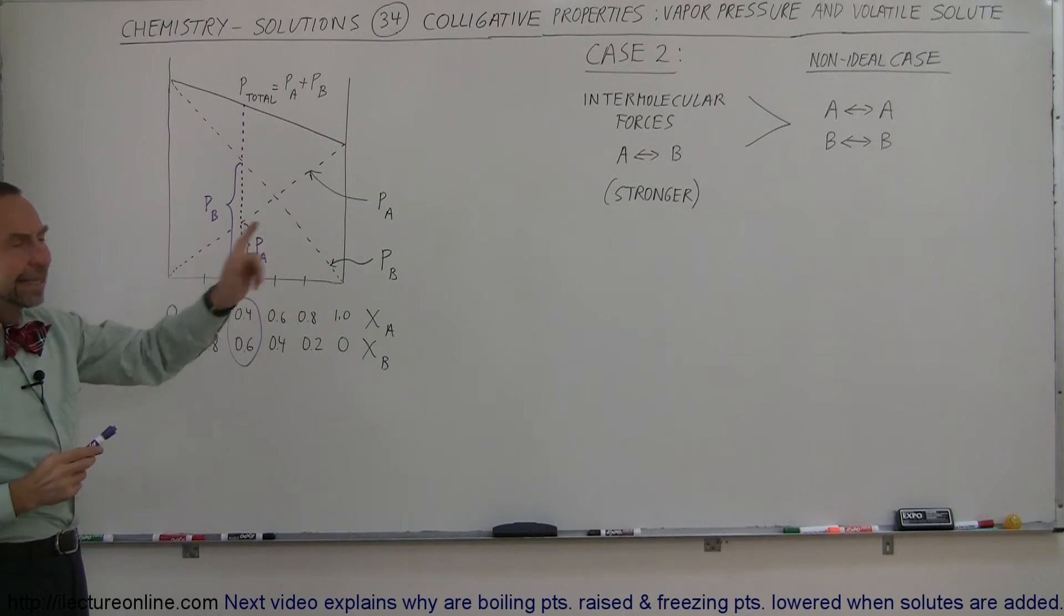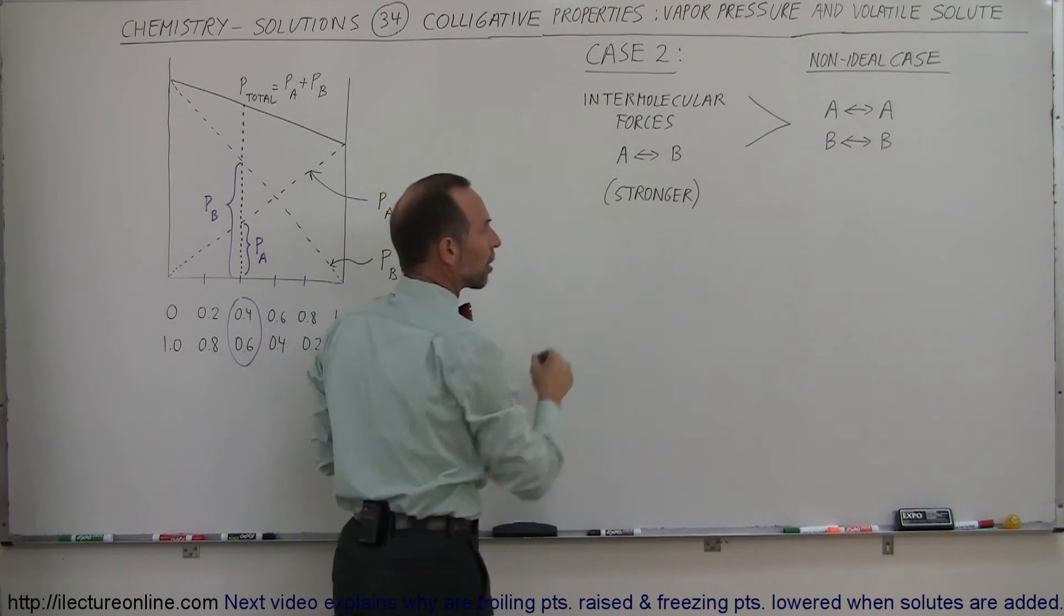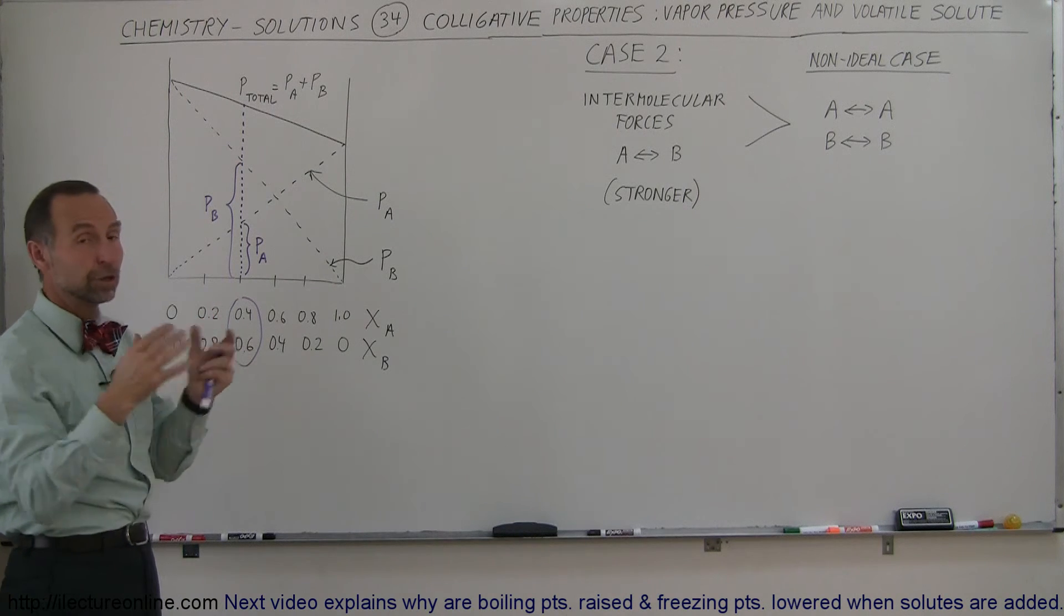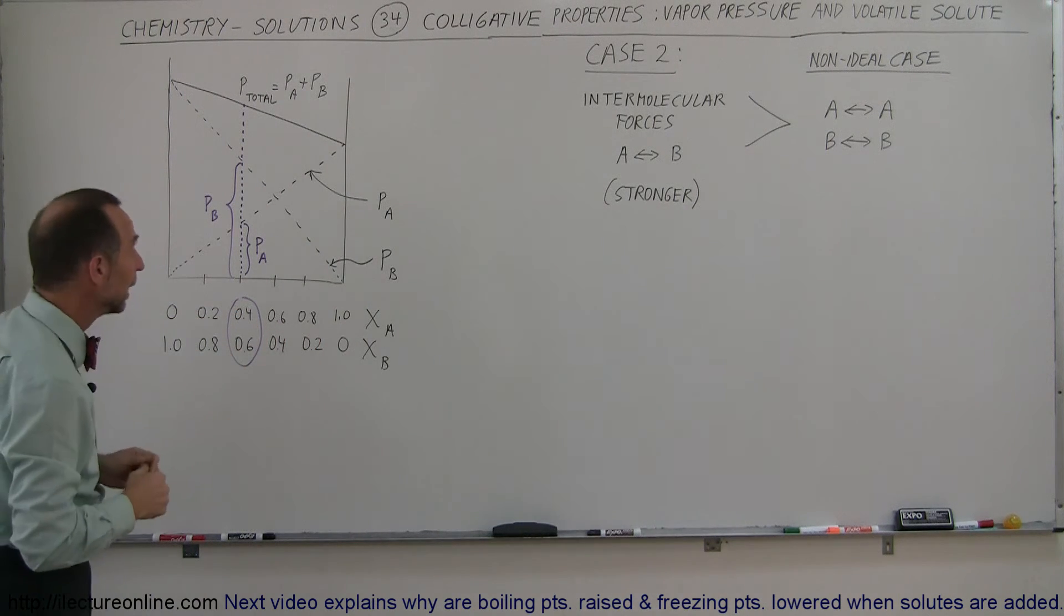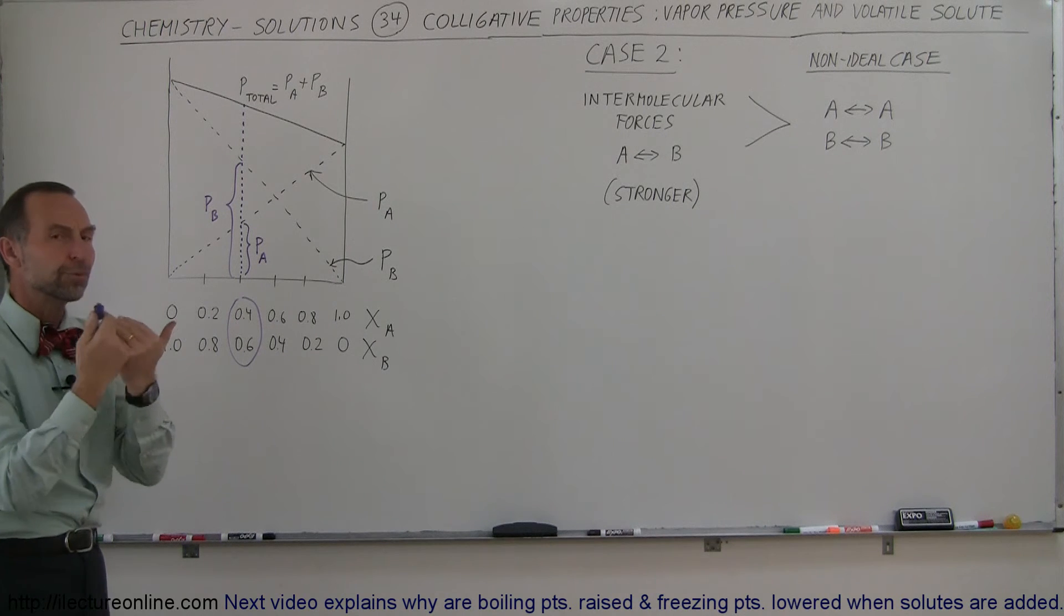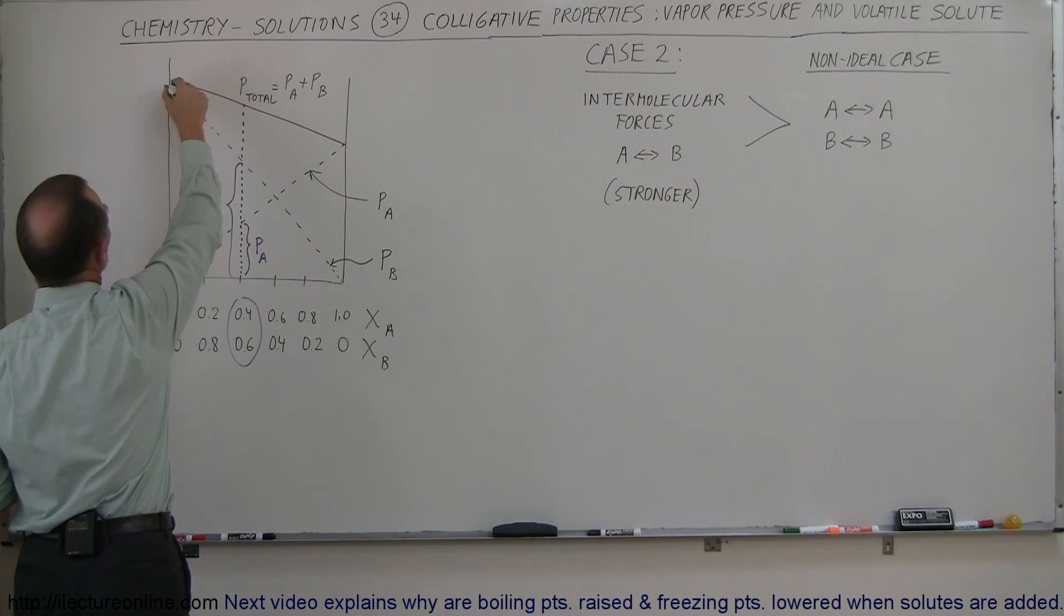But in the case we have a non-ideal situation where the intermolecular forces are stronger between the components A and B compared to the components between the A alone and between the B molecules alone, then what happens is it suppresses the vapor pressure of each.